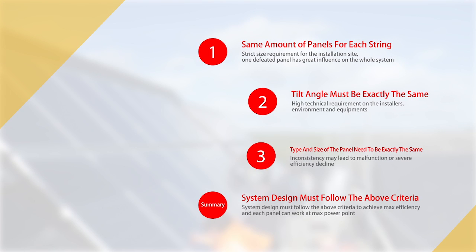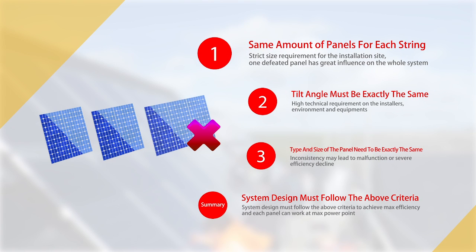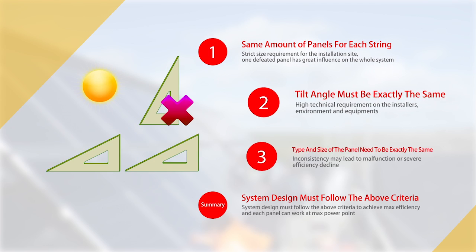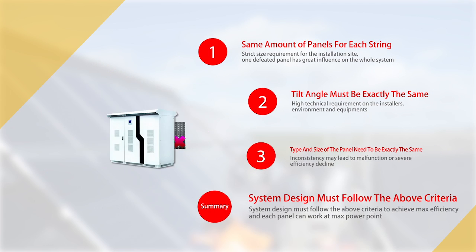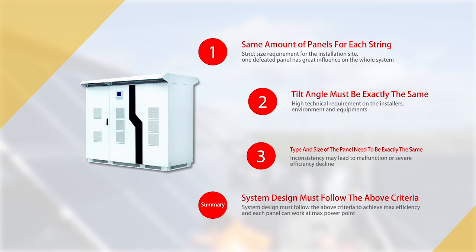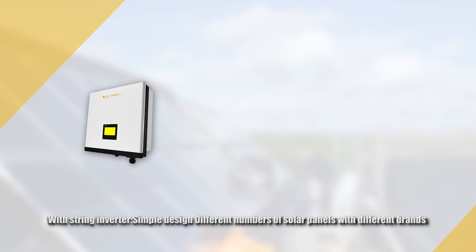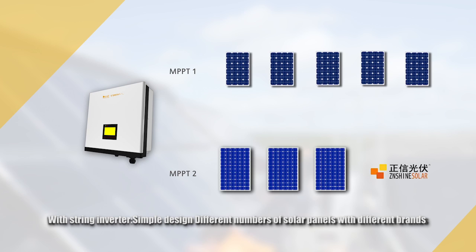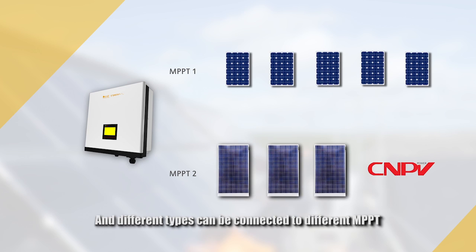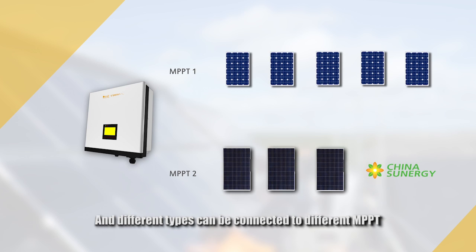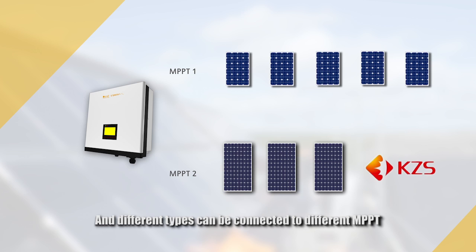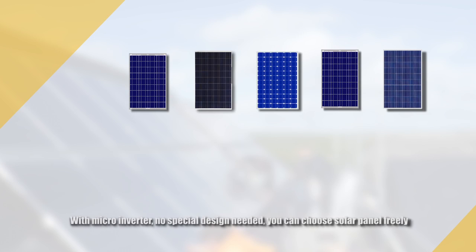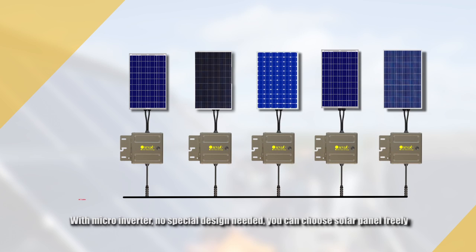Regarding flexibility in system design: central inverters require complex design with inflexibility. To ensure that each string of solar panels works at the maximum power point, the number of panels, tilt angle, panel type, and size of each string must be exactly the same. With string inverters, the design is simple — different numbers of solar panels with different brands and types can be connected to different MPPTs. With micro inverters, no special design is needed at all.